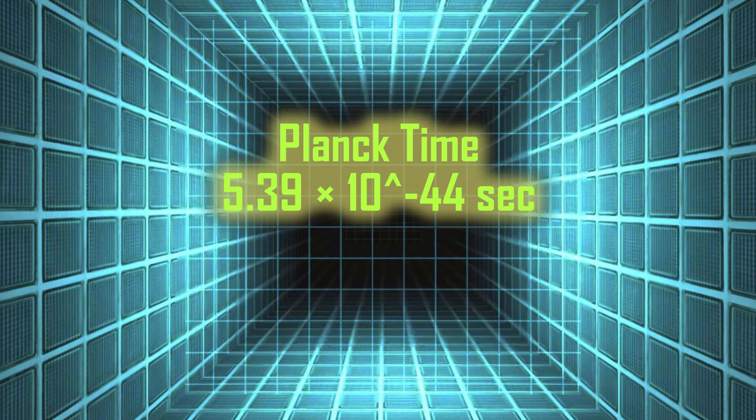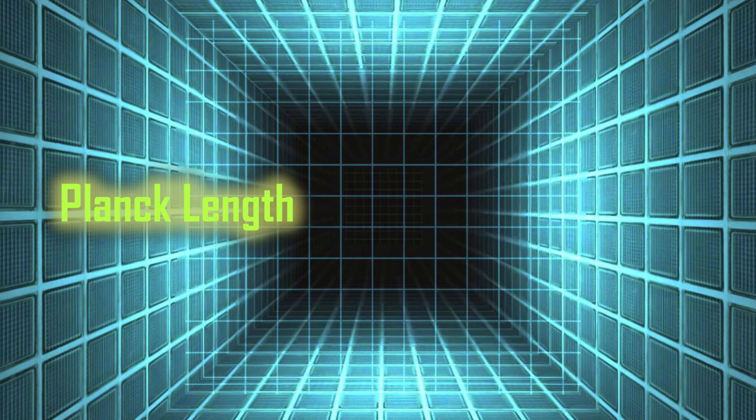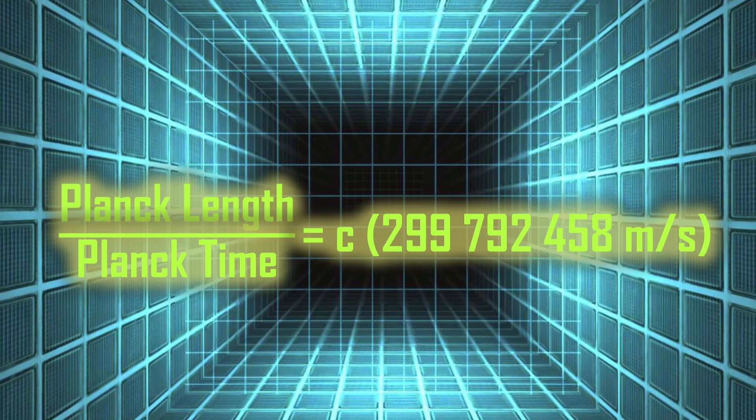Planck time is the smallest possible time interval that we can measure in our universe. When we divide Planck's length by Planck's time, we get the speed of light, which is the fastest possible speed in our universe. It may be possible that some very basic rules were defined and the initial state was set and the simulation of our universe was allowed to run, which resulted in highly complex universe that we see today.